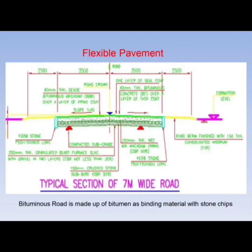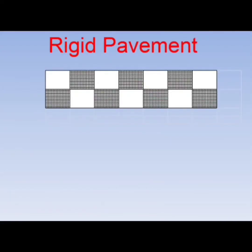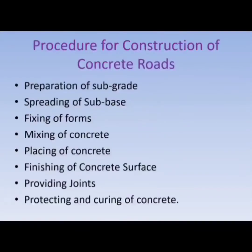Bituminous roads are generally laid on WBM (Water Bound Macadam) road or WMM (Wet Mix Macadam) road. Bitumen is used as the binding material. Rigid pavements are either plain cement concrete roads or reinforced cement concrete roads. Depending on the vehicular traffic load, these roads are generally laid in alternate panels because concrete expands and contracts, and to avoid cracks they must be constructed in panels.